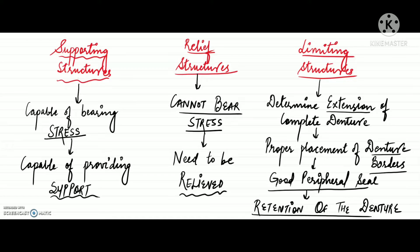So to summarize: supporting structures provide support to the denture, relief structures need to be relieved under the denture, and limiting structures determine the extension of a complete denture and enable retention. In this video we will talk about the supporting structures.